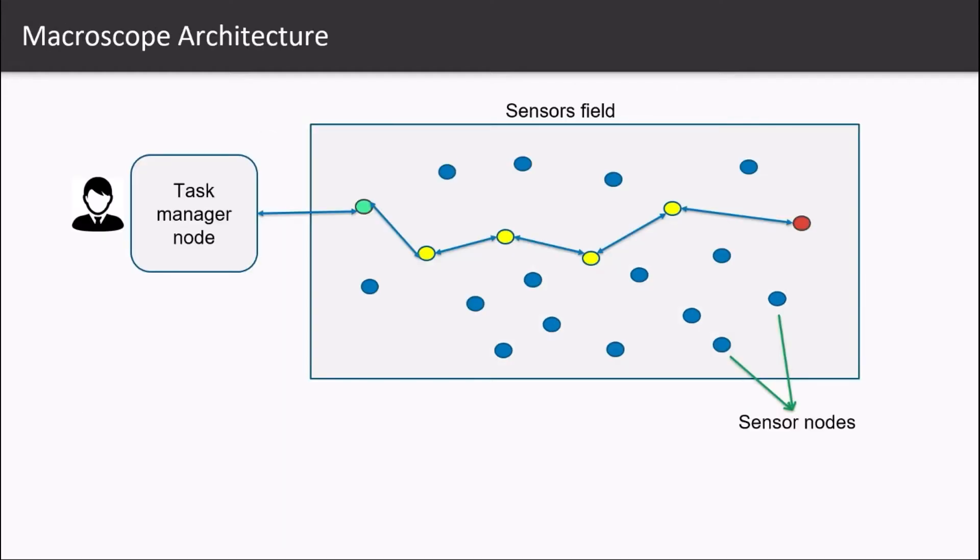The very basic architecture of wireless sensor network could look like this. A task manager, also known as remote users, controls and manages the entire network by communicating with single node in a network.